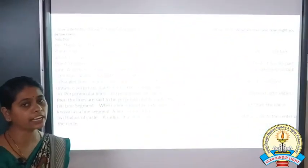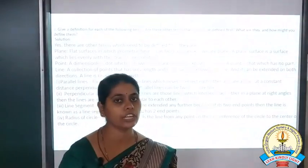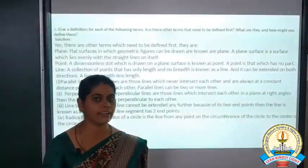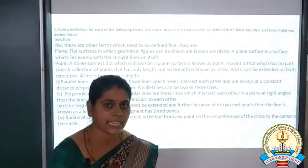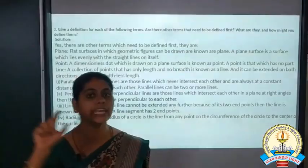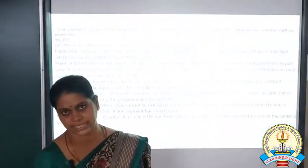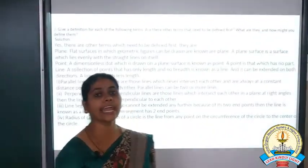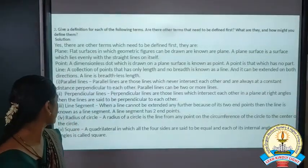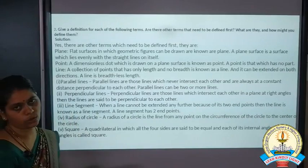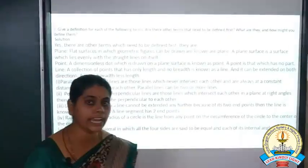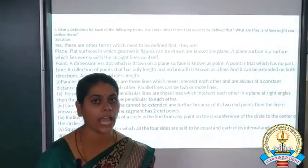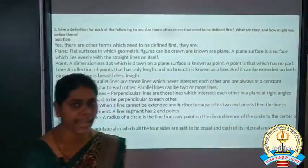Next is radius of a circle. Whenever you draw a circle you take some radius to draw it. Radius means the distance from the center to any point on the circle; that is called the radius of a circle. Next is square — all of you know it is a quadrilateral in which all sides are equal and all angles are equal to 90 degrees; it is called a square.